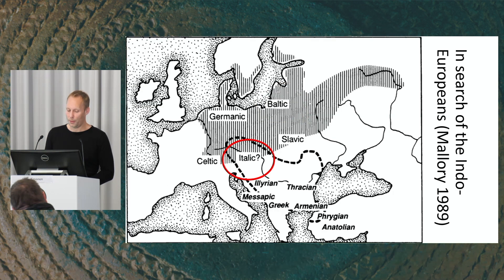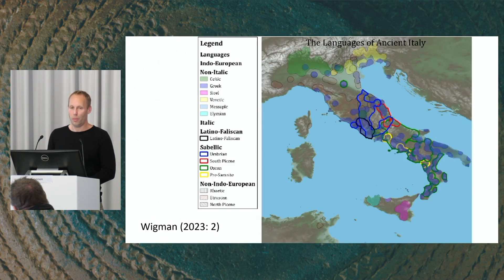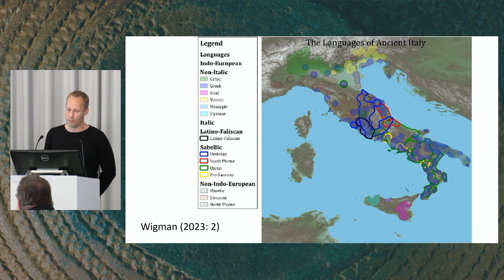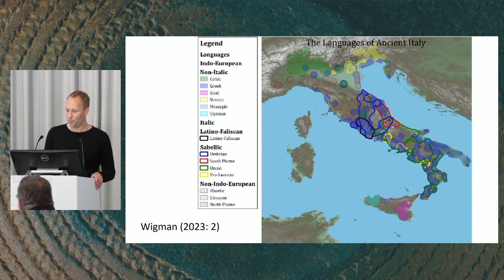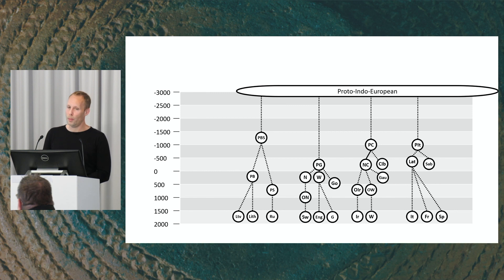Italic is also linguistically very complex — probably one of the most complex areas we know of at the dawn of history. We have Italic languages, Celtic languages, and other Indo-European groups such as Venetic and Messapic. It's incredibly difficult to project this onto steppe ancestry. People have also had a hard time delimiting proto-Italic in space and time, and there's much disagreement about when proto-Italic split into its daughter languages Latin and Sabellic.